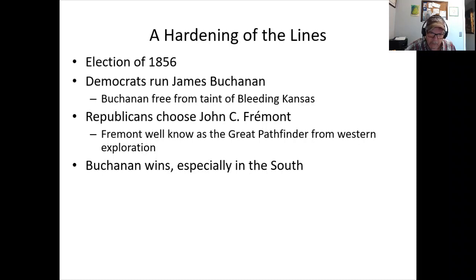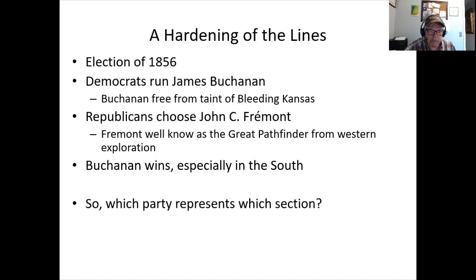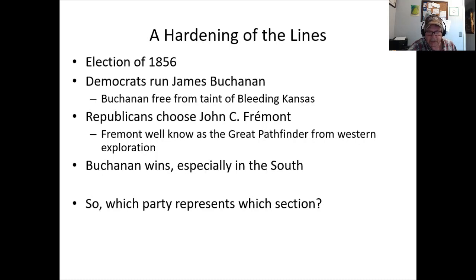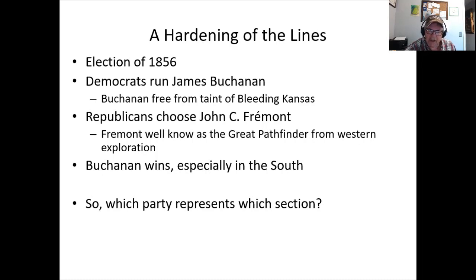Buchanan wins, especially in the South, because Fremont being a Republican triggers fear of the party's platform. By this point, which party represents which section is fairly clear: Republicans are a Northern phenomenon; Democrats, though split internally over slavery, more broadly represent the South. When we get to 1860, the Democratic Party splits into effectively three pieces — and that's the only way the relatively unknown, middle-of-the-road Lincoln wins the presidency.